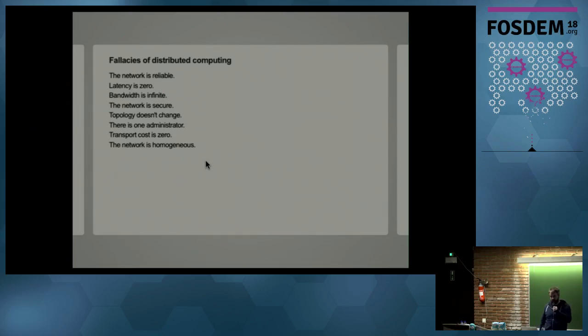So there's a great list of fallacies of distributed computing that came out of Sun Microsystems. I think it's got some great things in here, like the network is reliable. If you're running a distributed system that tells you that the network must be reliable for the system to work, be very distrustful of it. So this kind of thing makes building distributed systems interesting.